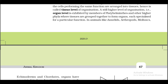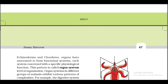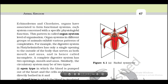A still higher level of organization, that is organ level, is exhibited by members of Platyhelminthes and other higher phyla, where tissues are grouped together to form organs, each specialized for a particular function. In animals like annelids, arthropods, mollusca, echinoderms, and chordates, organs are associated to form functional systems, each concerned with a specific physiological function. This pattern is called organ system level of organization.